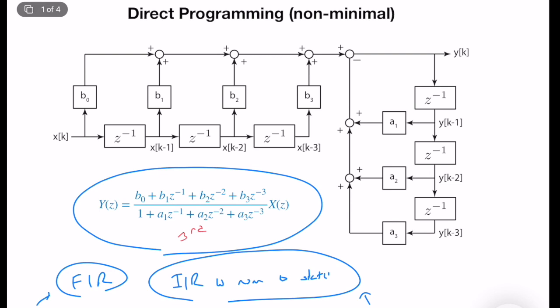This is direct programming, which we learned at the end of the last lecture. It's a correct realization, but the problem is we have one, two, three, four, five, six delay elements. This means we have six memory blocks and the order of the realization is six, but the order of the transfer function is three.